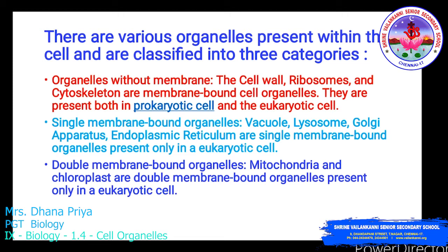The first classification is organelles without membrane — cell wall, ribosome, and cytoskeleton. These are present in both prokaryotic and eukaryotic cells. Single membrane-bound organelles include vacuole, lysosome, Golgi apparatus, and endoplasmic reticulum, present only in eukaryotic cells. Double membrane-bound organelles are mitochondria and chloroplast, also present only in eukaryotic cells.